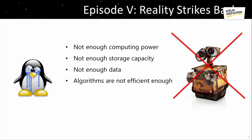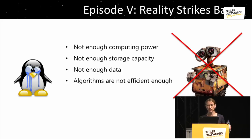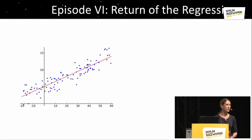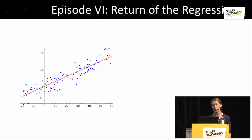Next episode: reality strikes back. You don't have enough computing power, you don't have enough storage capacity, you don't have enough data, and your algorithms are not efficient enough. So in the end, we are still stuck with regressions. People are doing regressions today — we do some more fancy stuff right now, but still many people do regression. And the point is, now we can do it fast, really fast and in a very efficient way. That's what I want to talk about today.